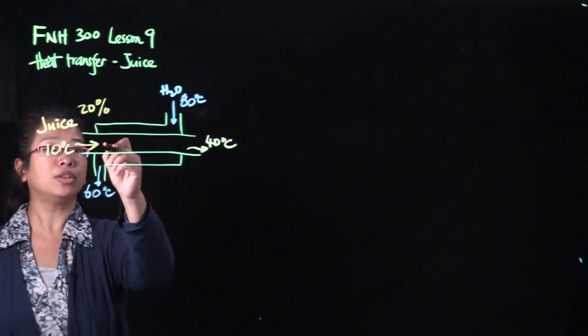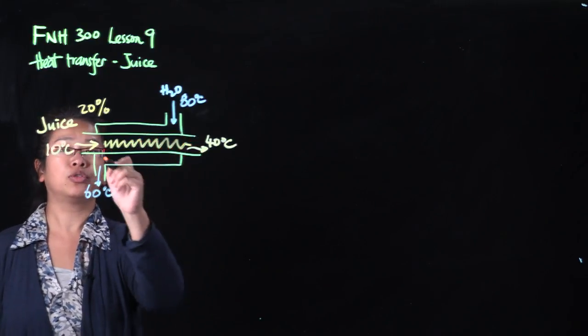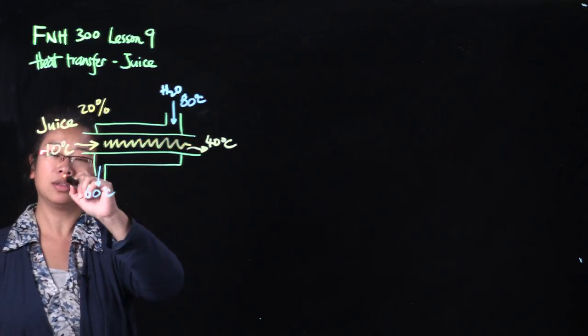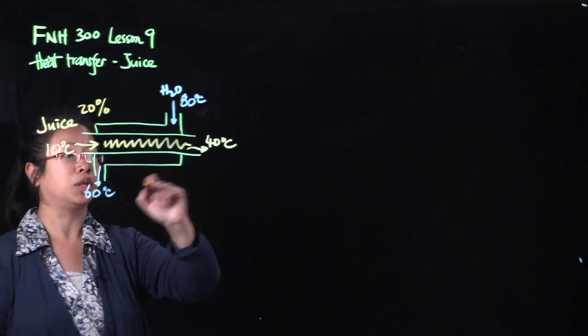And we are pumping the juice along the pipe. The starting temperature of the juice is 10 degrees Celsius. And the outcome that we want to achieve is 40 degrees Celsius.